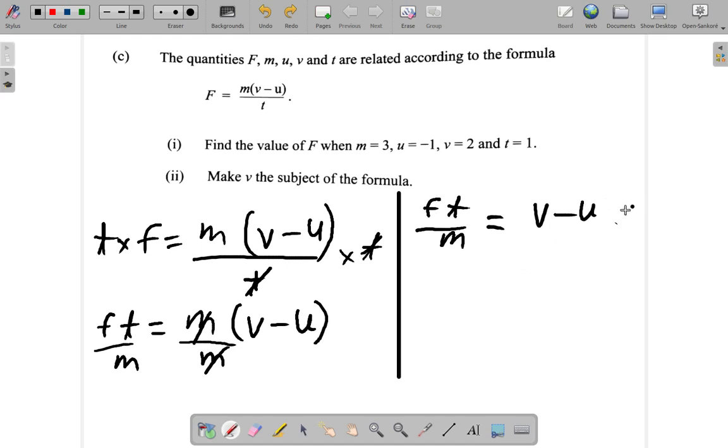Get rid of U now. Add U to both sides, here and here. Negative U plus U is 0. So we have V equals Ft over M plus U.